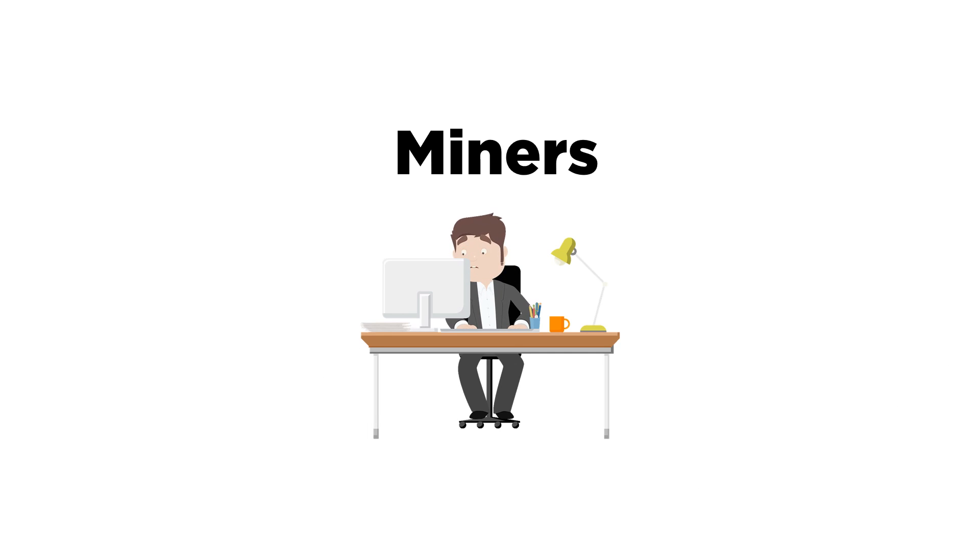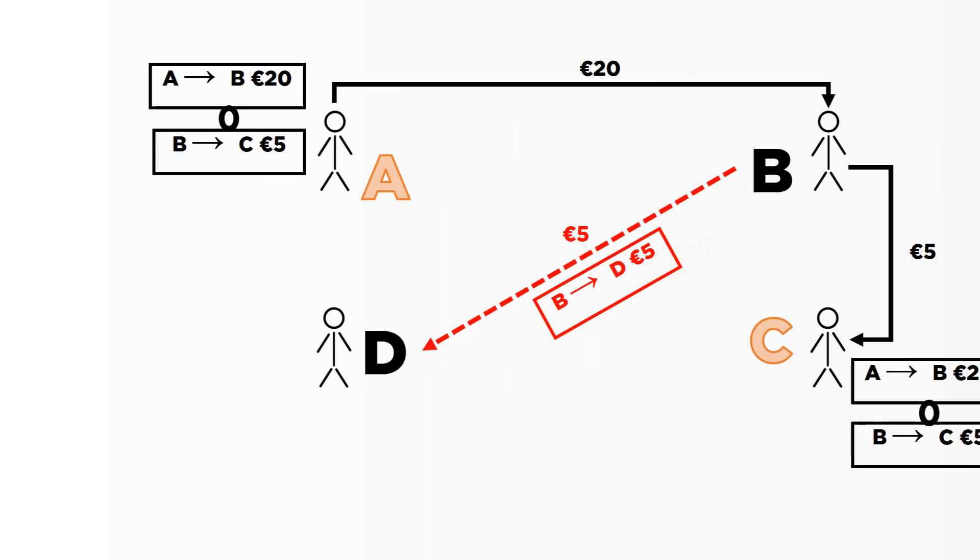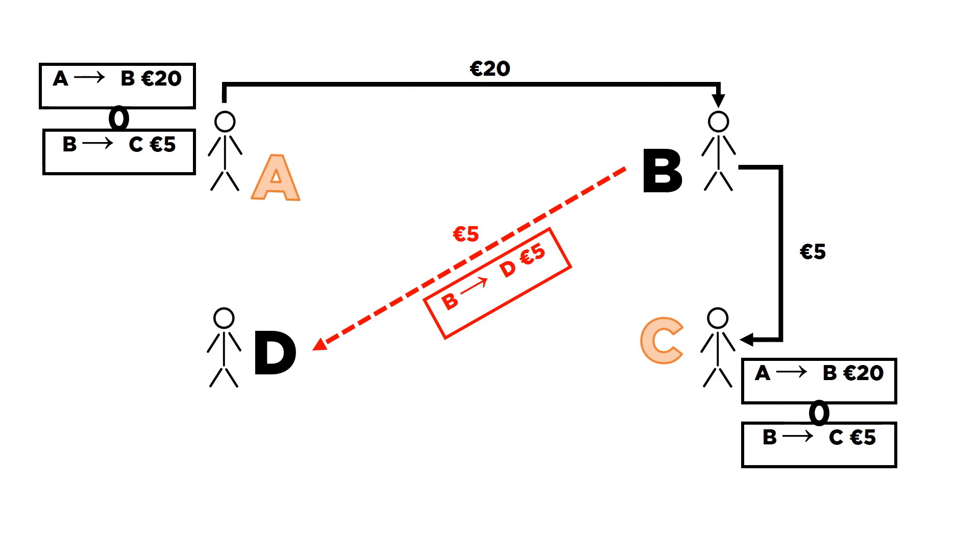Before we go any further, we must understand the concept of miners. Miners are special nodes or people that can hold the ledger. Let's assume that C and A are miners. Now this gets interesting because the way a transaction is validated is based on a competition. When A and C observe an invalid transaction, they will both compete to validate and add it to the ledger first. The miner who wins this race gets a financial reward.